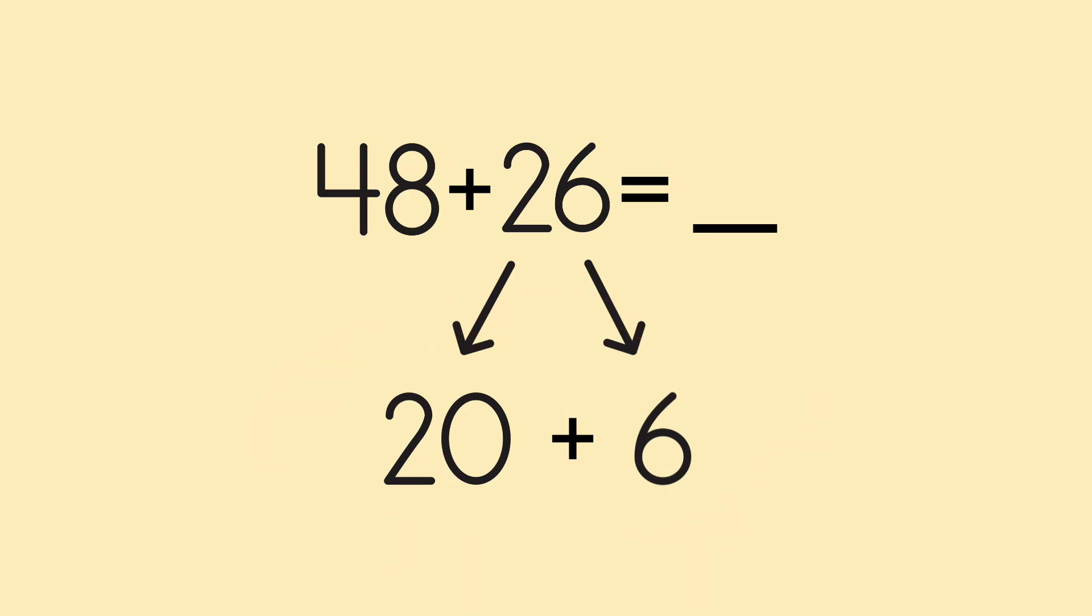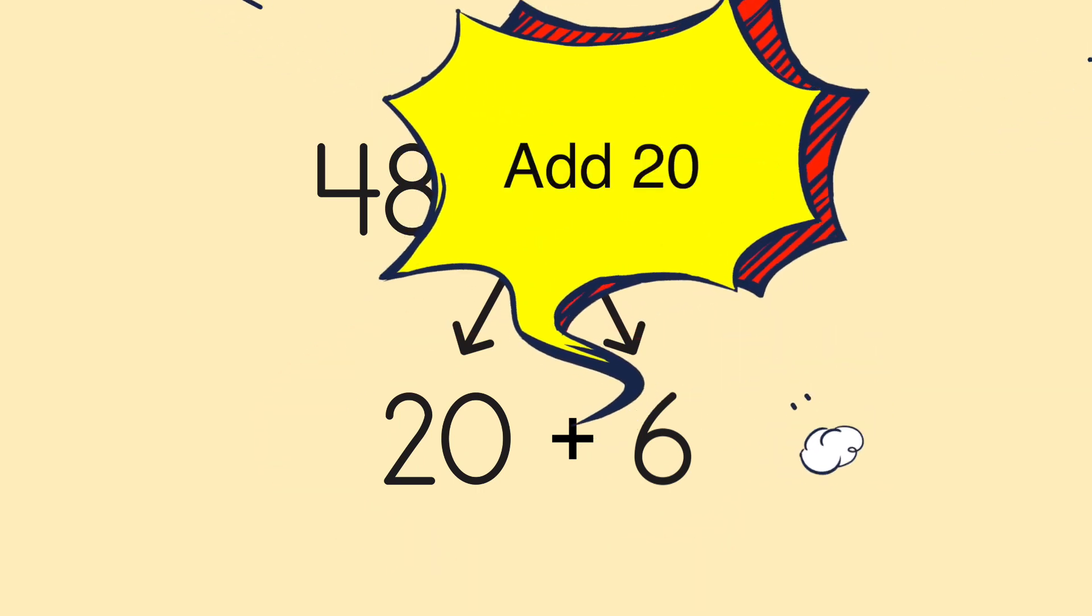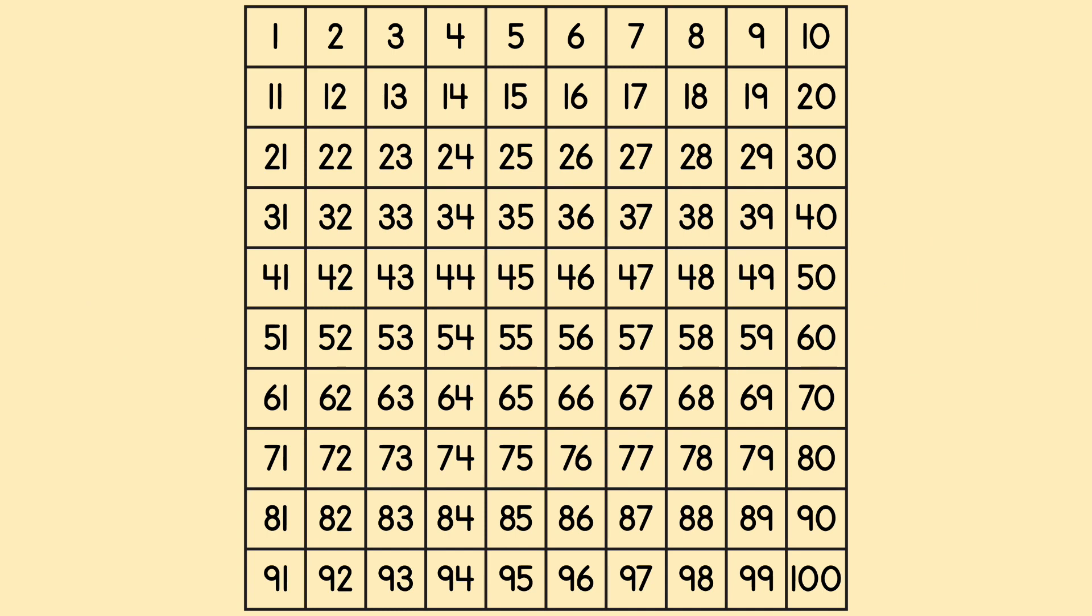So the first thing we're going to do is add 20 to 48. Find 48 and drop down two blocks. 10, 20. Now we're on 68.